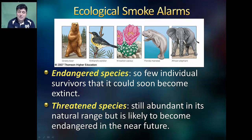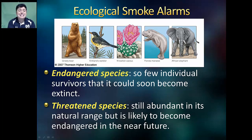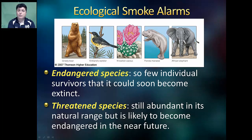Biologists can classify species on their way to extinction as either endangered or threatened. Endangered species are those which have so few individual survivors that they could soon become extinct. Threatened species are still abundant in their natural range, but are likely to become endangered in the near future.